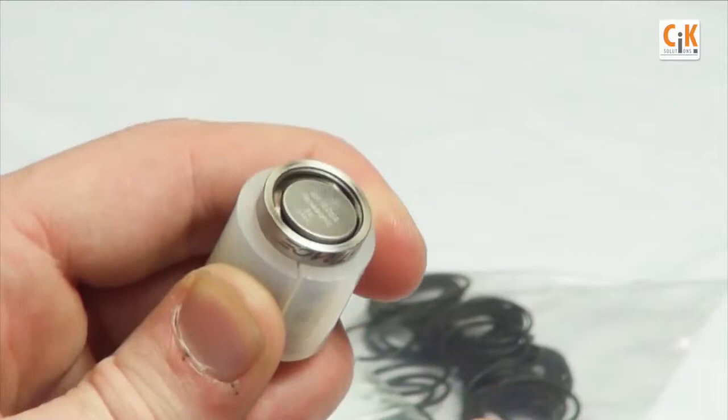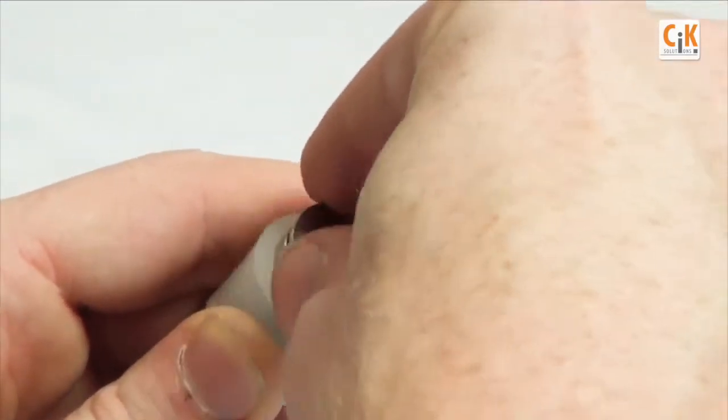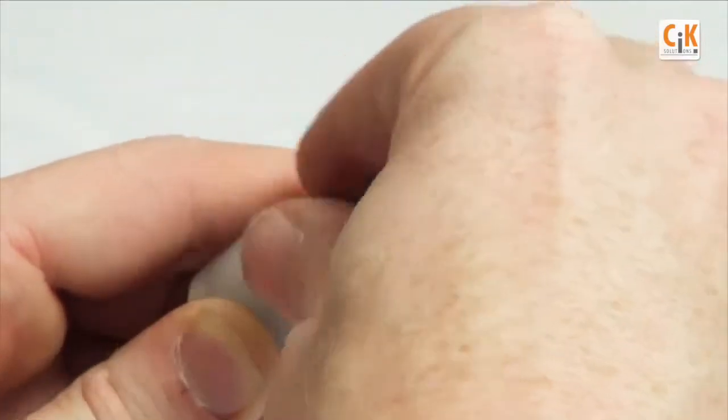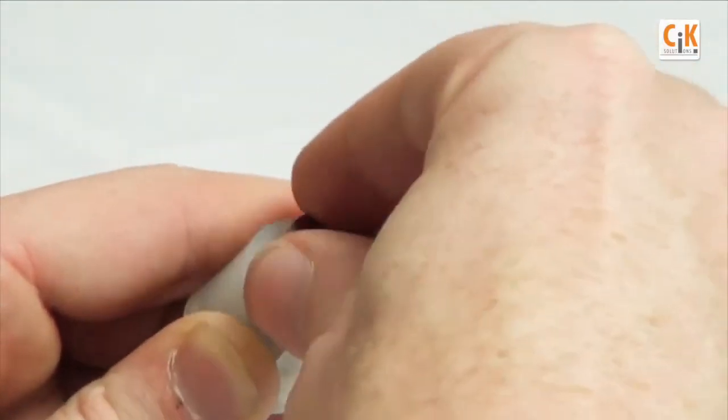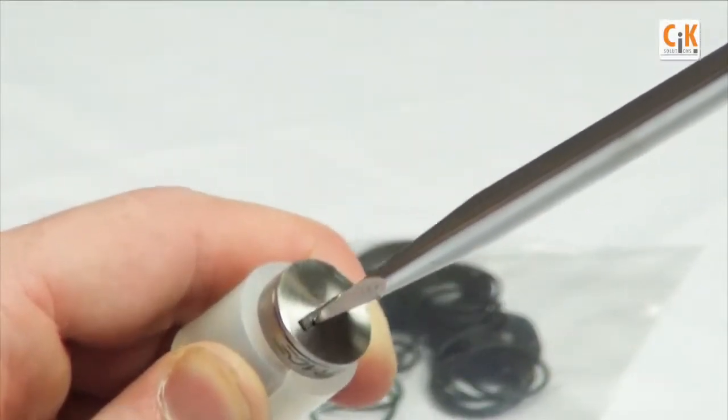Install the battery cap in the reverse of removal. Tighten the cap using a coin or flathead screwdriver until snug.